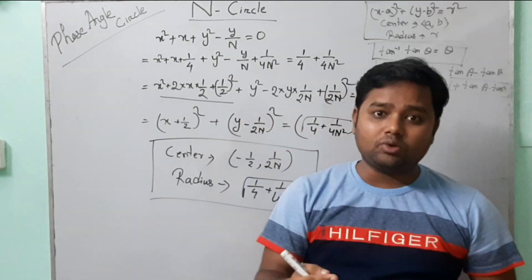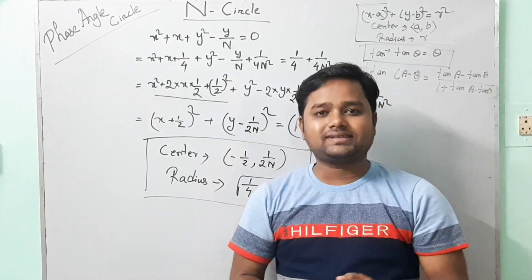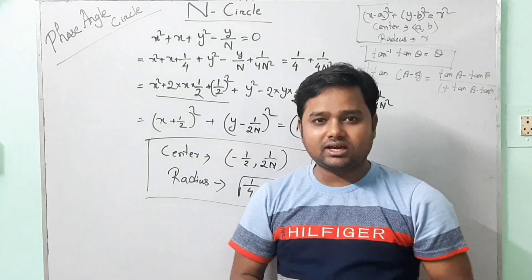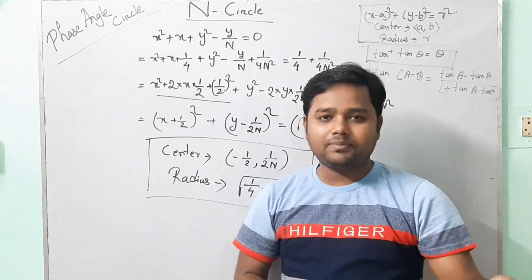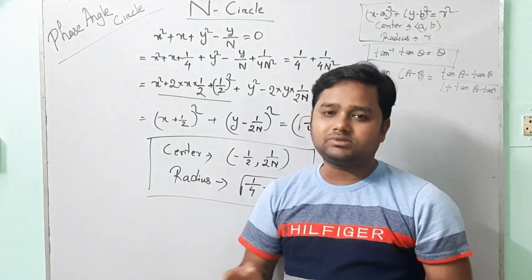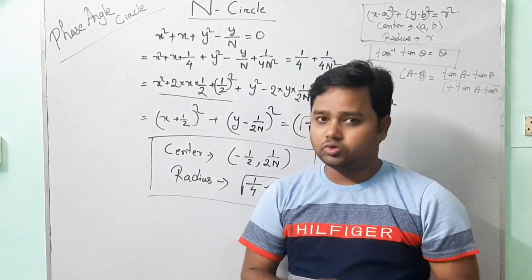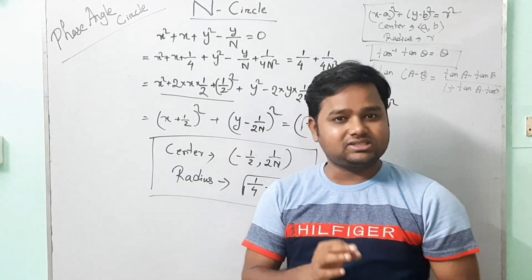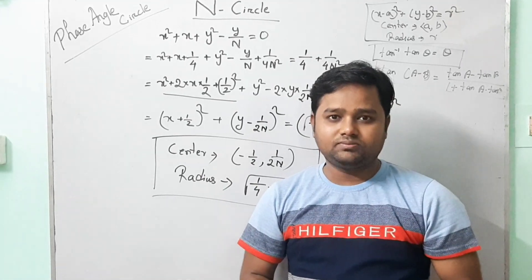So the phase angle circles we can get for different values of N. In this class, we have studied about the N circle, which is the constant phase angle circle. The N circle is now complete, and in total, the frequency response analysis for the stability criteria is over. Thank you.